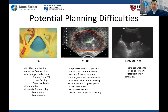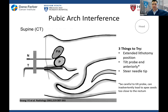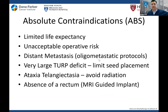For pubic arch interference, you can do a more extended dorsal lithotomy position — pushing the legs up raises the pubic arch a little higher and you can usually get some space. Sometimes you notice interference mid-implant, save that needle for the end, hyperextend the legs and get that seed in. You can also tilt the probe anteriorly, though be careful not to leave apex seeds too close to the rectum. You can steer needles, or do a slight reverse Trendelenburg to torque everything up and slide right underneath the pubic arch.